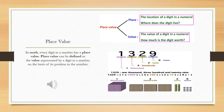Okay class, now after the international number system and understanding about digits, we are moving towards the next topic: place value. In math, every digit in a number has a place value. Place value can be defined as the value represented by a digit in a number based on its position in the number. It may sound difficult but it is not — it is very easy.